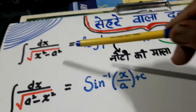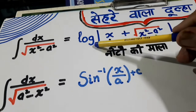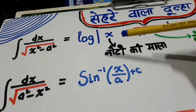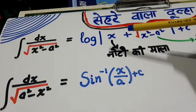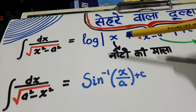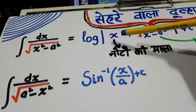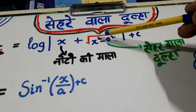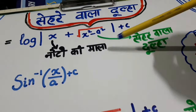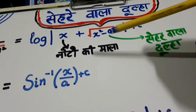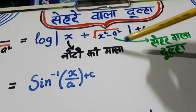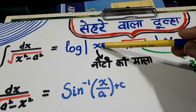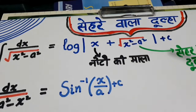Now look here. In this case, the answer is log of x plus square root of x square minus a square. The answer will be very very easy — whatever the question is given to you, you just add x inside and take the log.